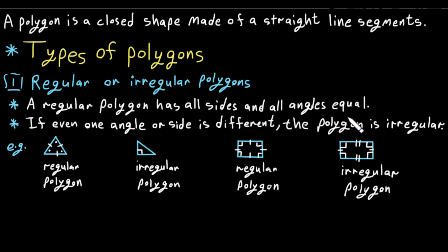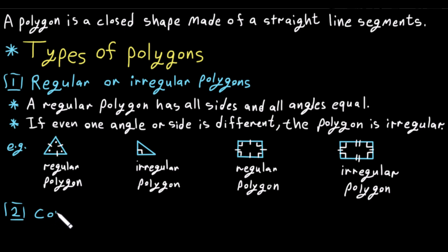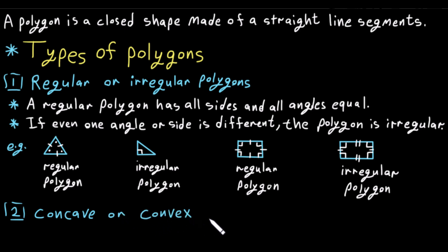Now let's take another type of polygon classification: concave or convex polygons.